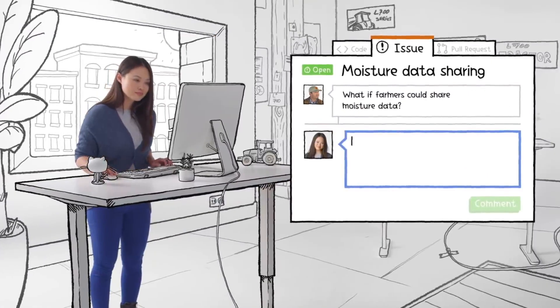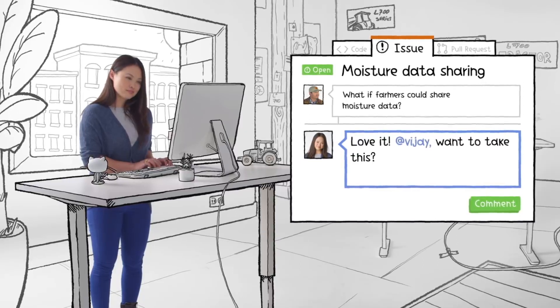Sam is the first one on her team to see Eddie's issue, and she thinks that Vijay would be the best person to start the job.